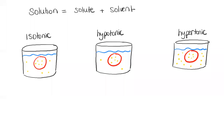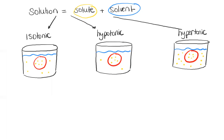We've already established that a solution is made from a solute dissolved in a solvent. Let's look at some examples of different types of solutions. Whenever we are describing a solution, there are actually three types: isotonic solutions, hypotonic solutions, and hypertonic solutions. Let's look at the prefixes of each word — a prefix is the first part of the word, and each one gives us a hint about what type of solution we are looking at.